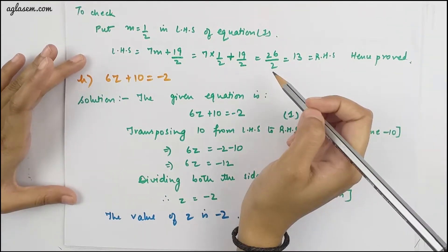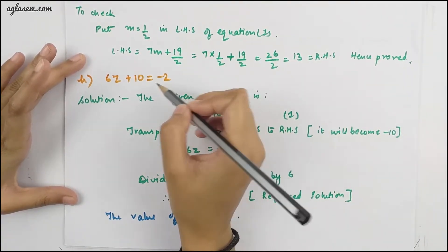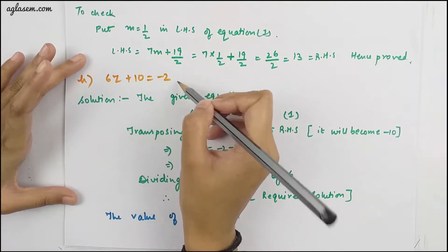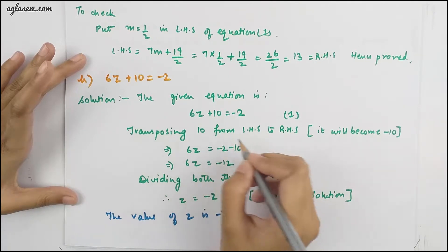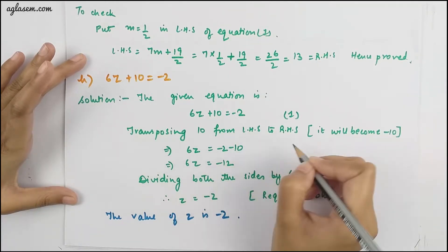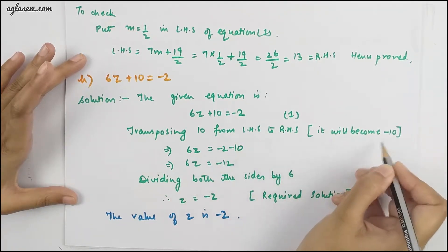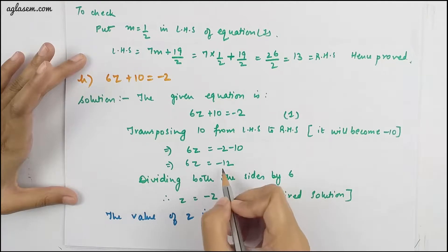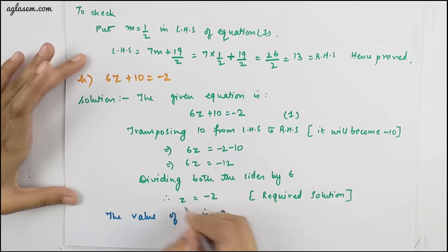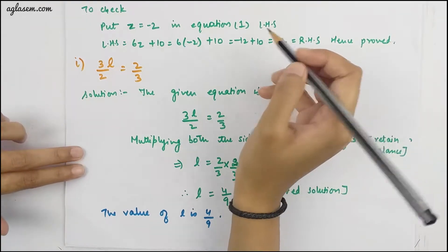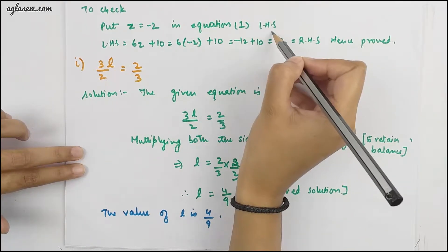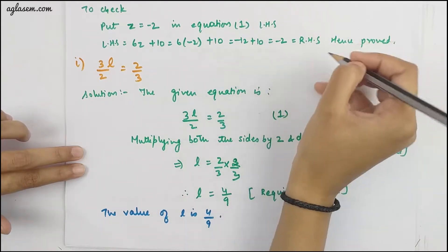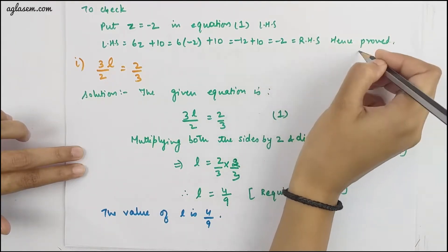The H part is 6z + 10 = −2. Transposing 10 from LHS to RHS, it becomes −10. From there, we have z = −2. To check, put z = −2 into the LHS of the equation — that equals the RHS. Hence proved.